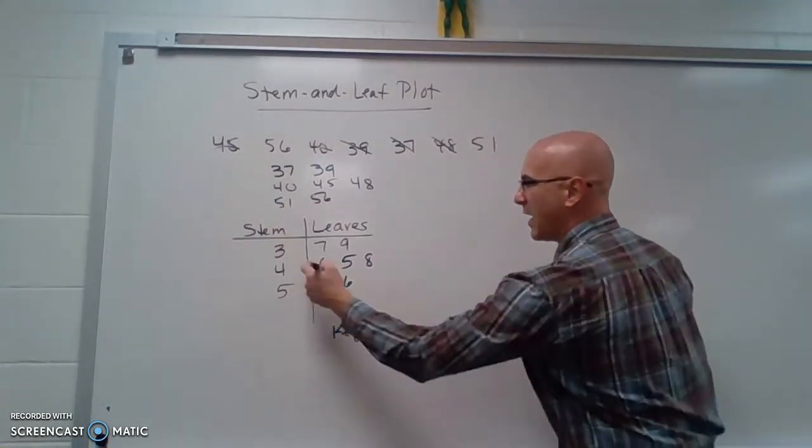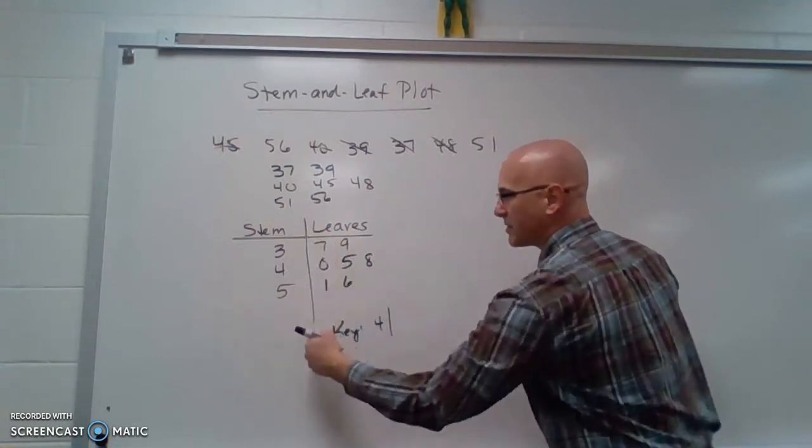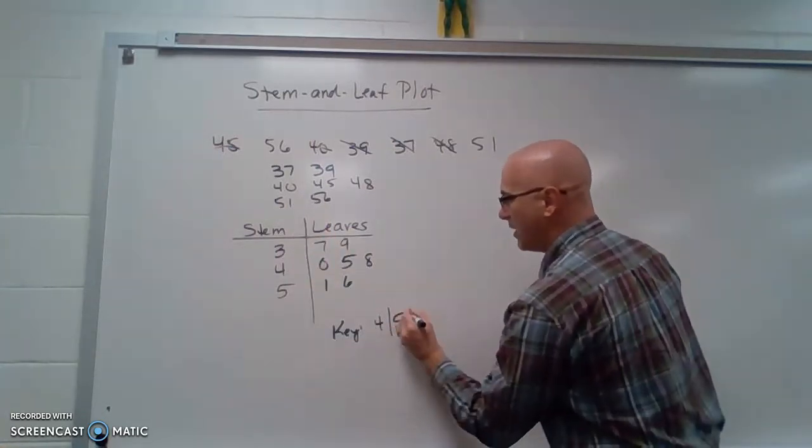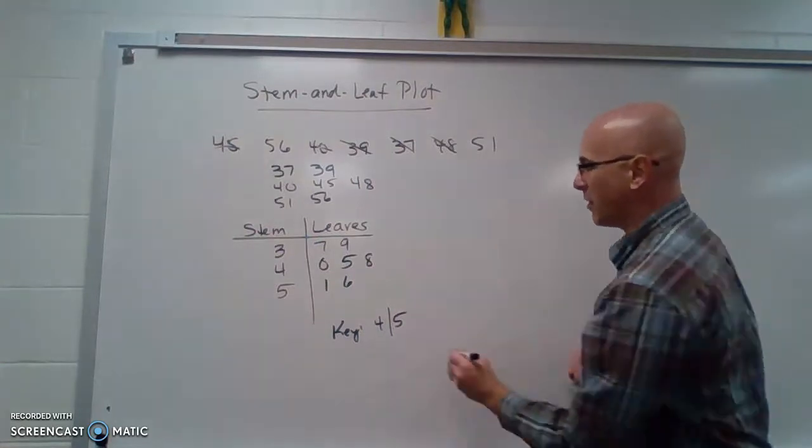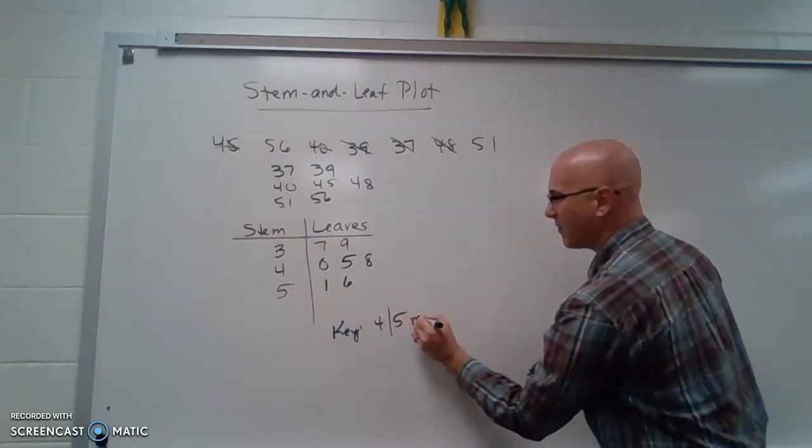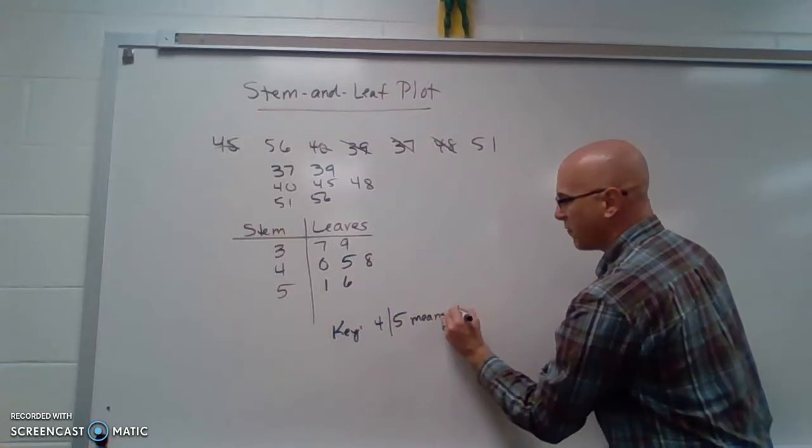and we say 4, and then we put the line that represents the dividing line, and we'll just pick one of those. We say 4 line 5 means 45.